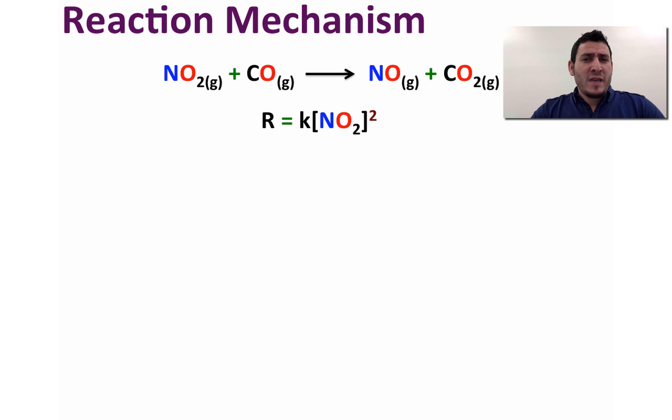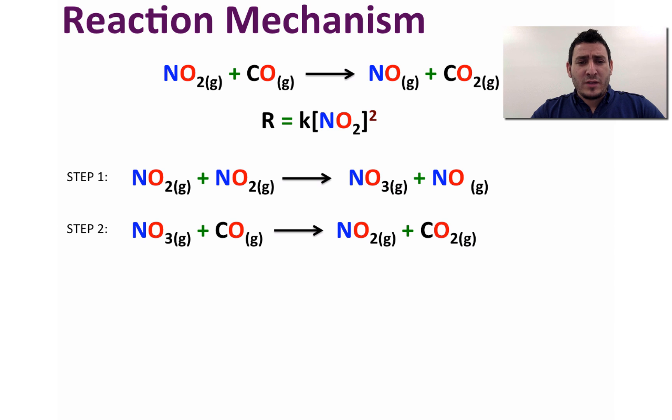Now the mechanism proposed for this reaction is constituted of two steps. The first step is the reaction between 2 NO2 molecules to give NO3 plus NO. The second step is the reaction between NO3 that was formed in the first step and the carbon monoxide to give nitrogen dioxide and carbon dioxide. Note that NO3 is an intermediate which by definition is a species that is not a reactant nor a product, that forms in the reaction and doesn't show up in the overall equation.